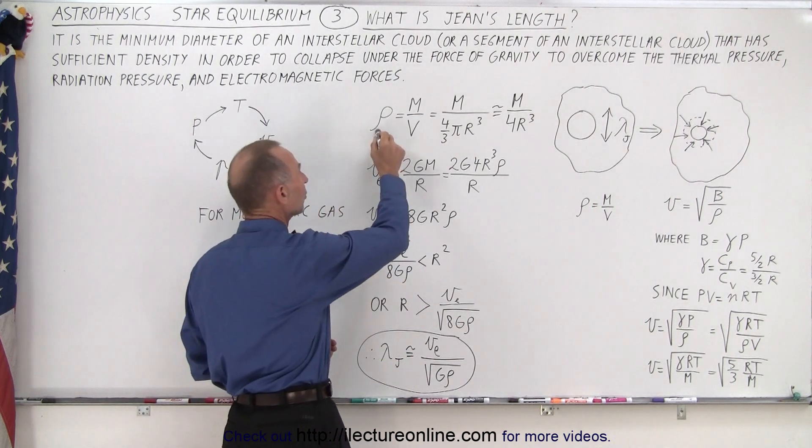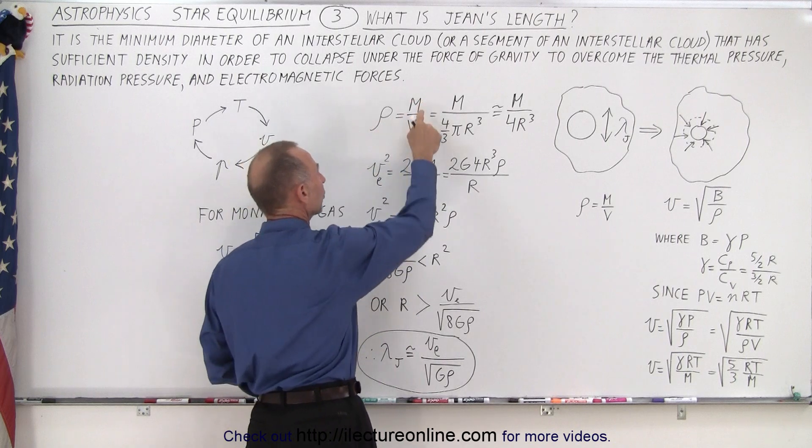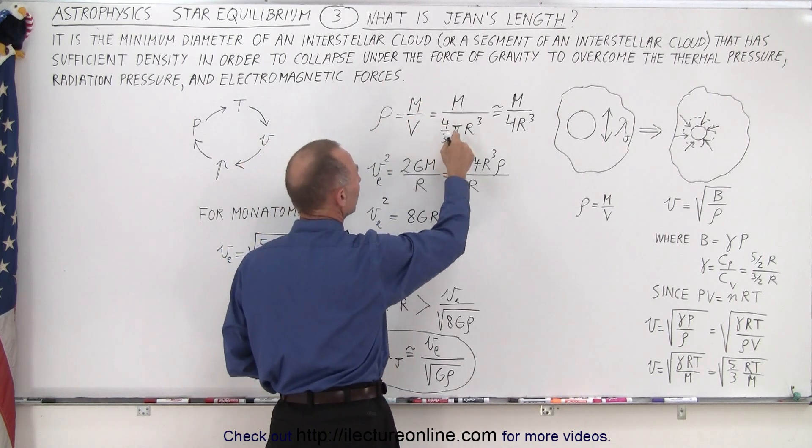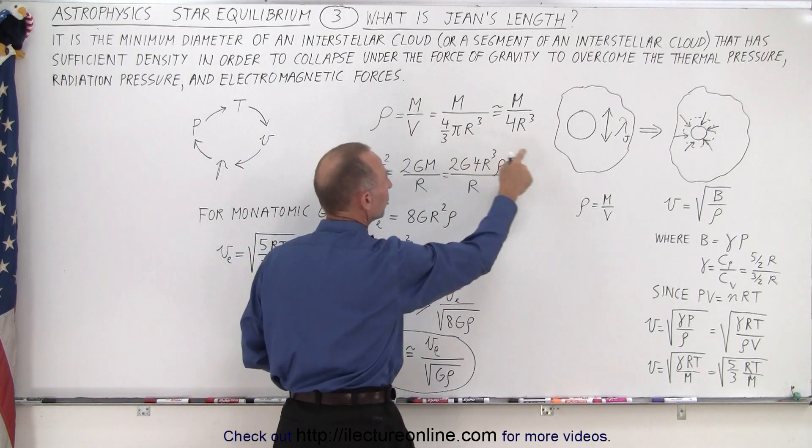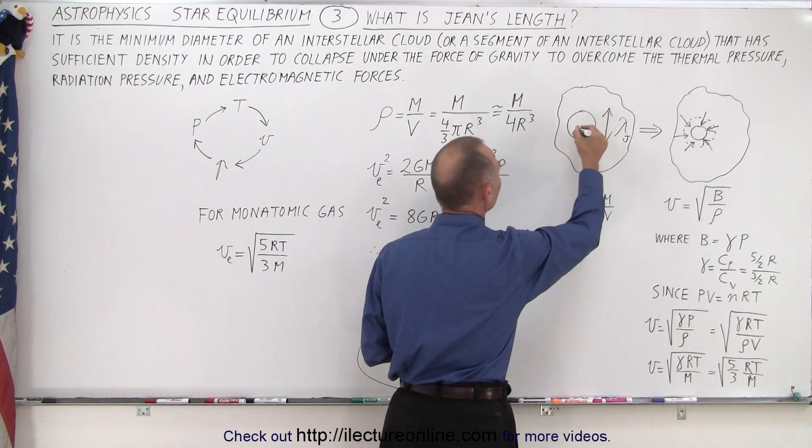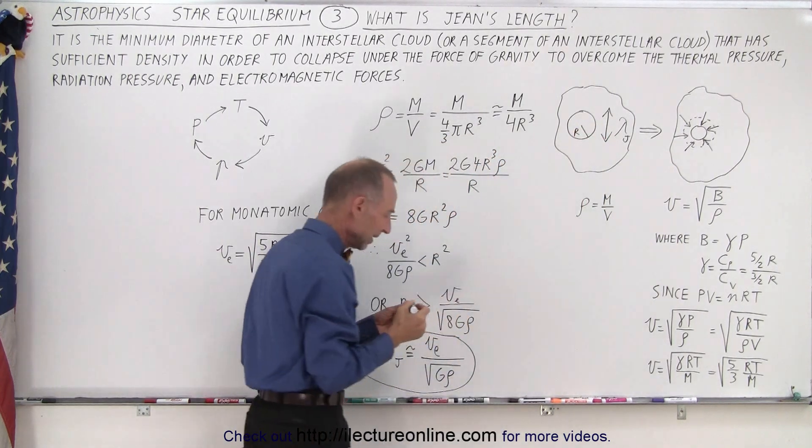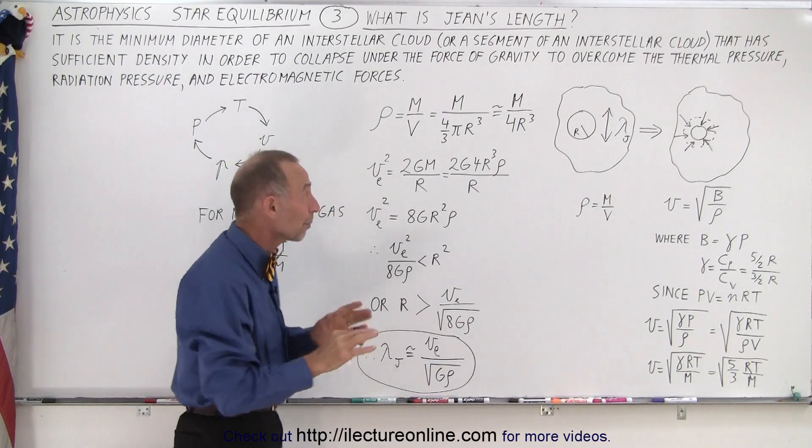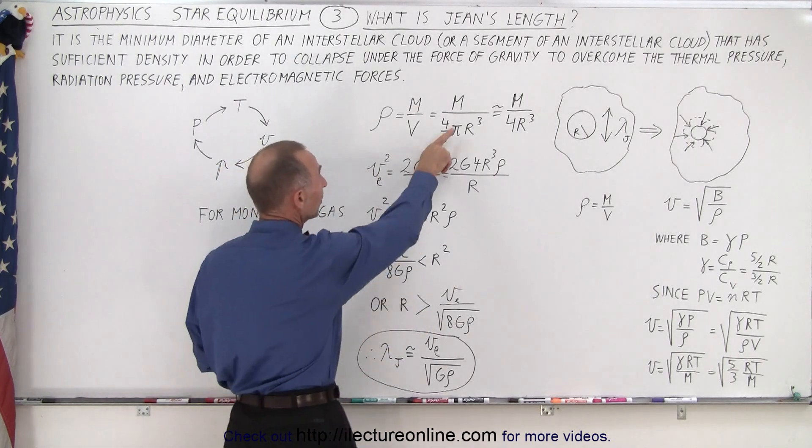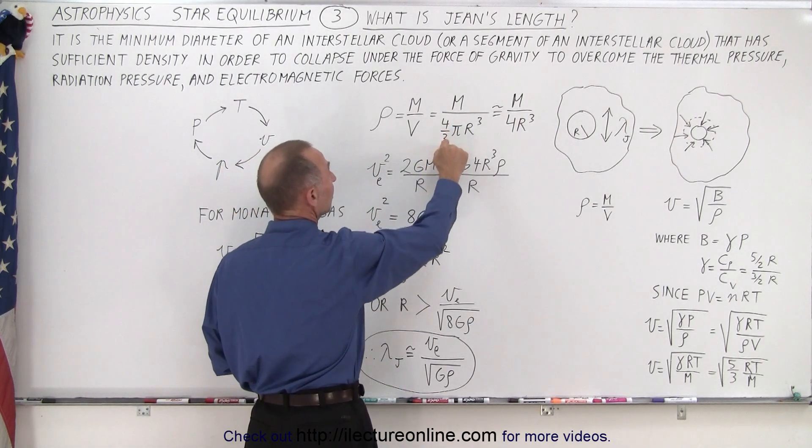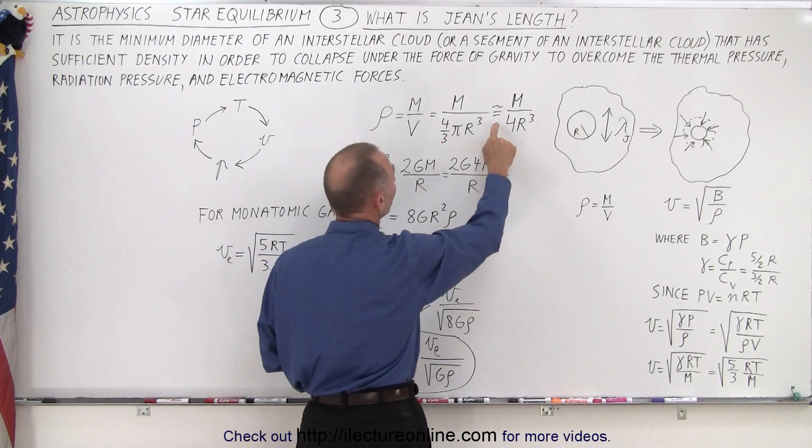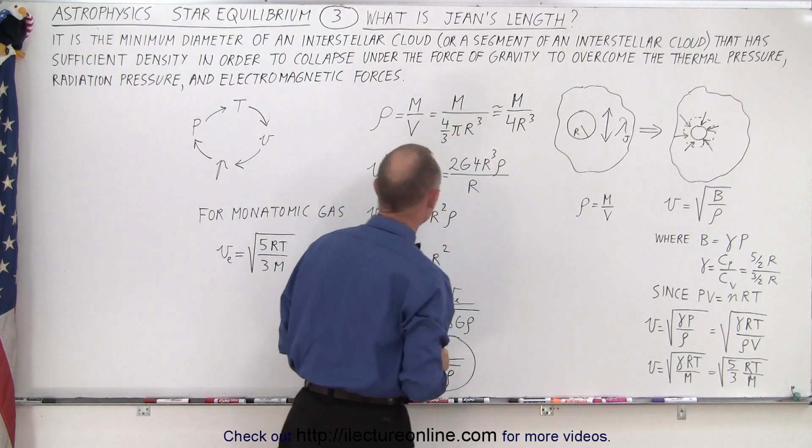We then come over here again to the concept of density, which is mass over volume, and we can write the volume as being 4 thirds pi r cubed, where r then of course would be the radius of this segment right here. And of course since pi is approximately equal to 3, we can simplify this equation by just taking this ratio to be 1, and so it's approximately equal to the mass divided by 4r cubed.